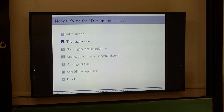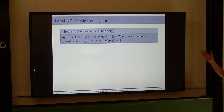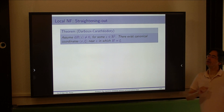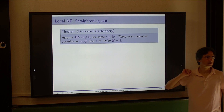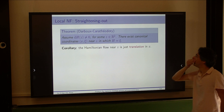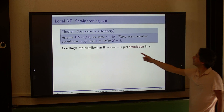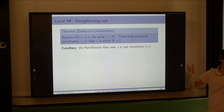Let me review what we know about 1D Hamiltonians. The regular case is ancient — due to Darboux, Carathéodory, Liouville, and others. If your Hamiltonian is not critical at a point, then you can replace it by just one coordinate. This completely trivializes everything from the symplectic point of view — you can compute the Hamiltonian flow explicitly. The caveat is that since it is local, the Hamiltonian flow will eventually leave the neighborhood where this is valid.